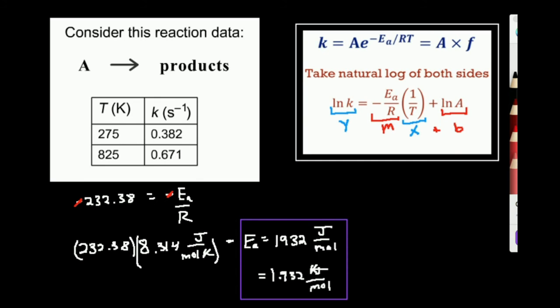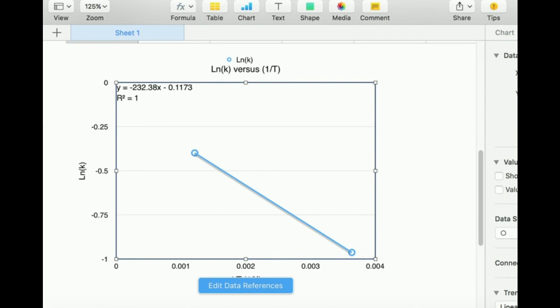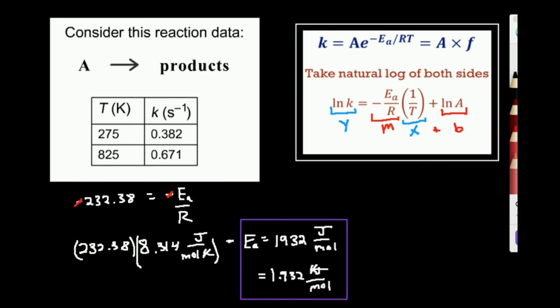So that means when I plot these, I can tell a lot from this graph because of the slope. Now the y-intercept, I can also tell some stuff from. The y-intercept is negative 0.1173.